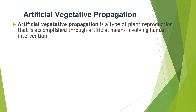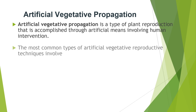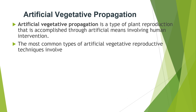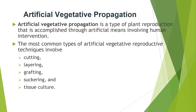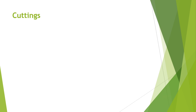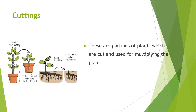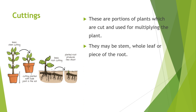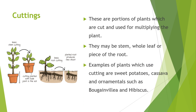Artificial vegetative propagation is a type of plant reproduction accomplished through artificial means involving human intervention. The most common types of artificial vegetative reproductive techniques involve cutting, layering, grafting, suckering, and tissue culture. These methods are employed by many farmers and horticulturists to produce healthier crops with more desirable qualities. Cuttings are portions of plants which are cut and used for multiplying the plant; they may be stem, whole leaf, or a piece of root. Examples of plants which use cuttings include sweet potatoes, cassava, and ornamentals such as bougainvillea and hibiscus.